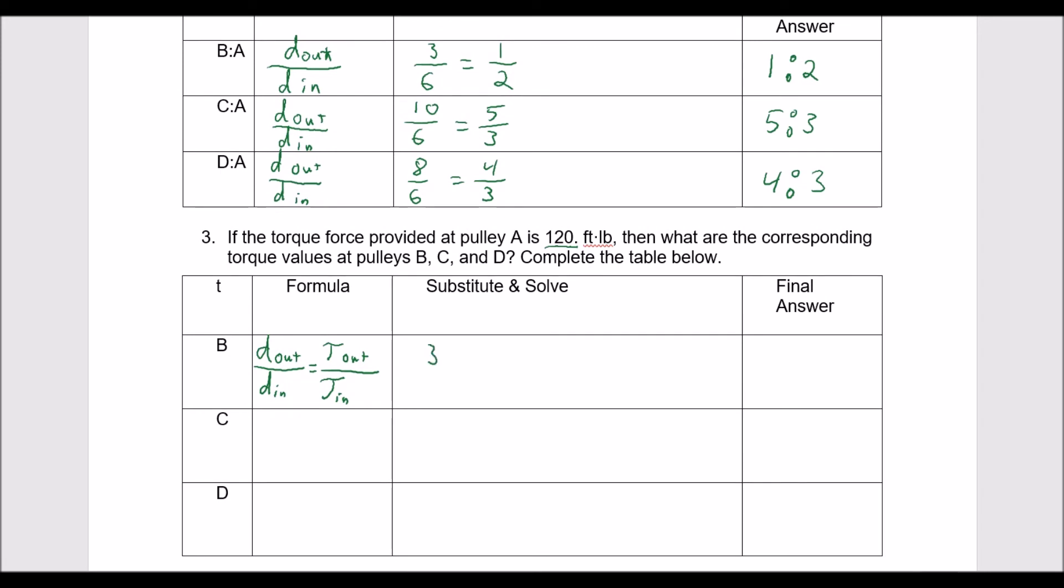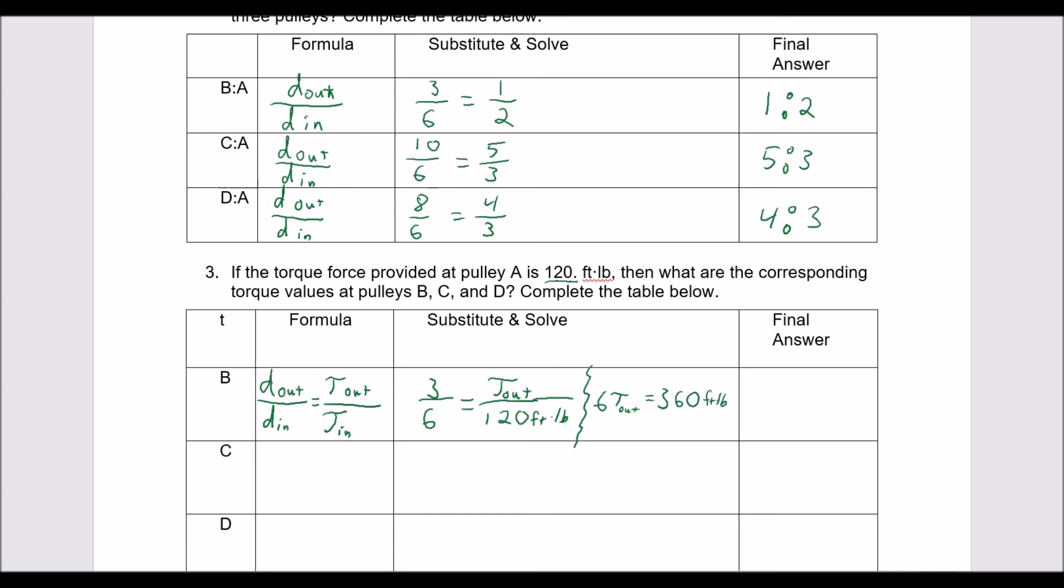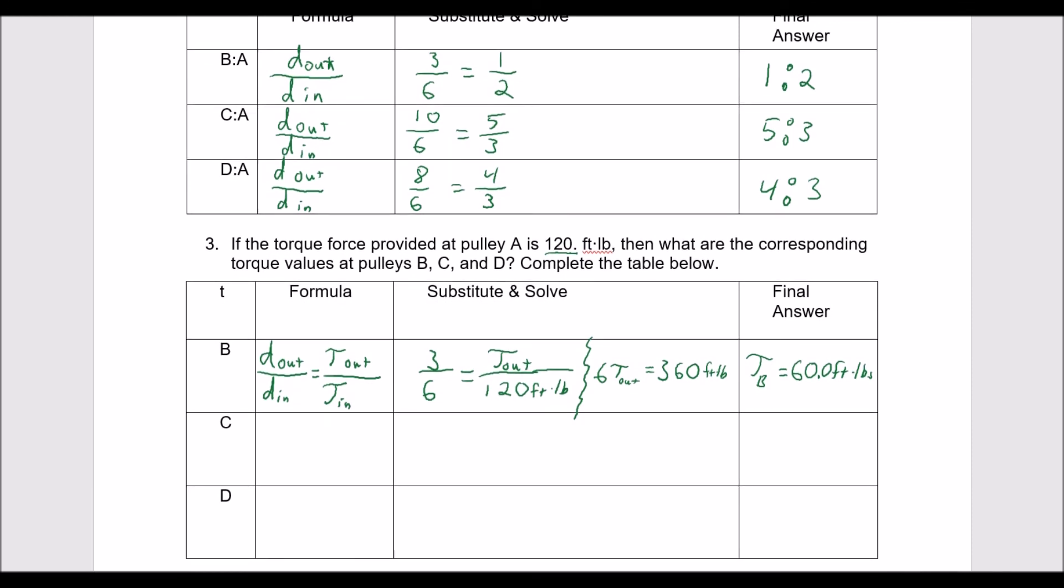And we can just substitute it in. 3 divided by 6 is equal to the thing we don't know, the output torque, over the input torque. So then we simply solve for output torque. So our torque at B will be 60.0 foot-pounds. And then we just do the same thing for C and D.